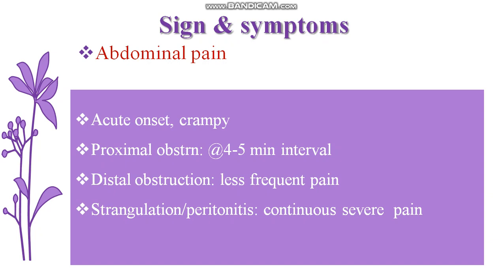In strangulation and peritonitis, there will be continuous severe pain. Usually abdominal pain in intestinal obstruction is acute in onset and there is crampy abdominal pain. In the proximal region obstruction, there is an interval of 4 to 5 minutes in between two episodes of pain.